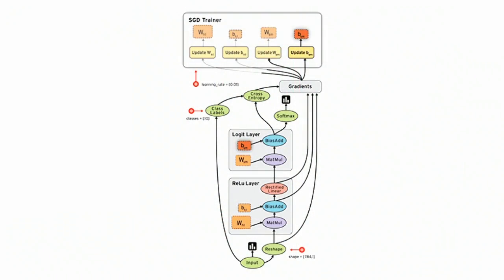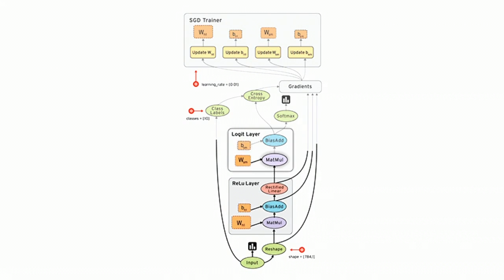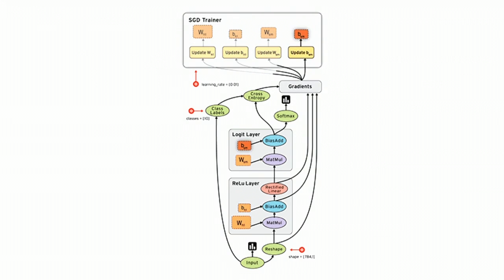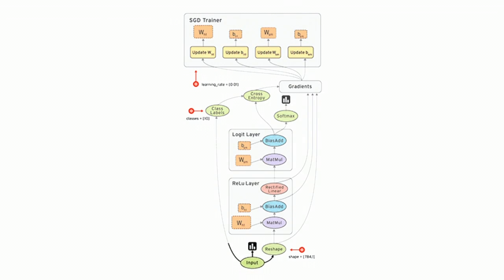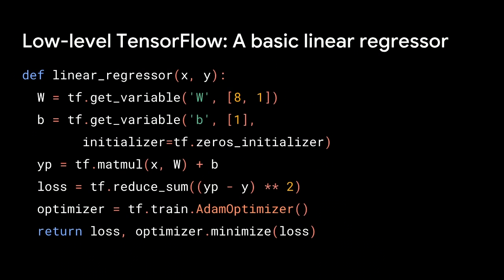TensorFlow, underneath its hood, is a distributed graph execution engine. You build up a computational graph, often with Python, pass it to the core TensorFlow distributed runtime, and execute that graph. Here we have a graph for a two-layer neural network. We're going to build a simple graph and execute it on a TPU.